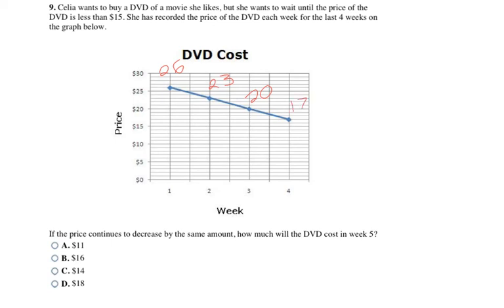If I look here, these numbers are decreasing. If I go 26 minus 3, that gets me to 23. Then 23 minus 3 equals 20. And then 20 minus 3 equals 17. So if I want to go one more time to the fifth week, I'm going to take 17 minus 3, which is 14. And that's going to be my answer, choice C. $14 on the fifth week, so she can go ahead and buy it.